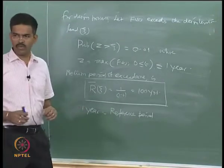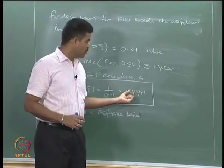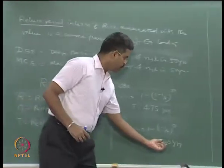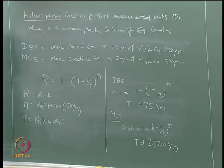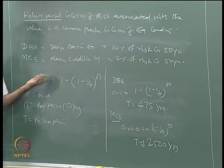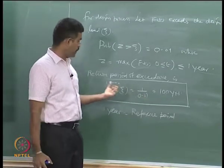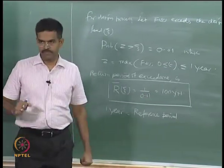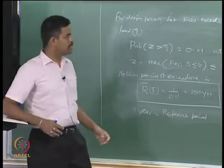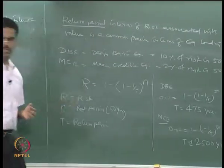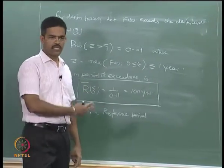One can always find out what is the risk associated with an event whose return period is 100 years for a reference period of 1 year. We can easily calculate that from this equation. So one can always estimate return period based on the risk associated, or based on the level of exceedance probability of a pre-accepted value zeta. Both ways are valid. Now, one may wonder why in earthquake engineering people talk about risk, while in wave loading or wind loading they do not. What is the difference?